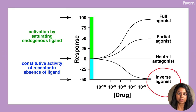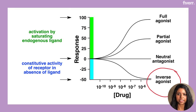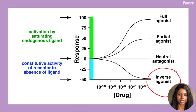When an inverse agonist binds to the drug receptor, it produces an effect which is opposite to the effect produced by a full agonist. For example, if the agonist increases the heart rate, binding of the inverse agonist will cause a decrease in heart rate. In the presence of a full agonist, an inverse agonist behaves like an antagonist. An example is the effect of naloxone on the mu receptors.